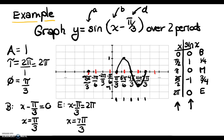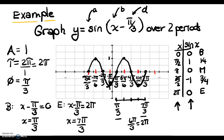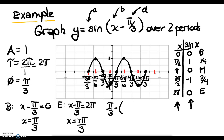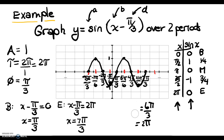We repeat that graph to get a complete two periods. To verify you have two periods, subtract the endpoints: 7 pi over 3 minus pi over 3 is 6 pi over 3, which is 2 pi — that's one complete period. We can also check the other side: pi over 3 minus negative 5 pi over 3 gives 6 pi over 3, or 2 pi — a complete period. We need to make sure we have complete periods.